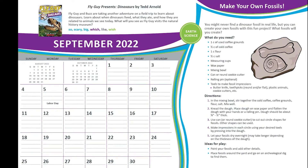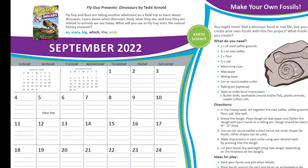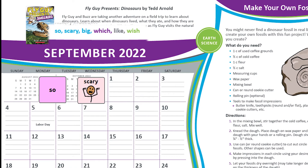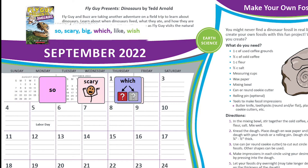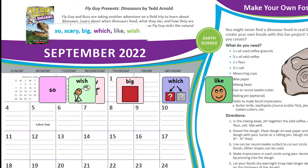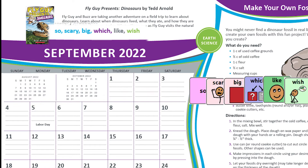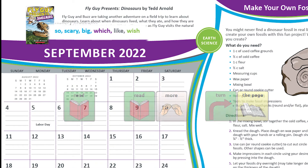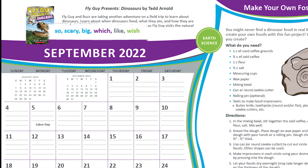The words we encourage you to model this month are: so, scary, big, which, like, wish, and a few others. Let's take a closer look at how to model these words and tap your way through the story.